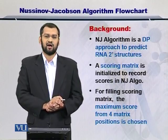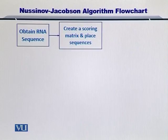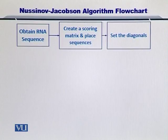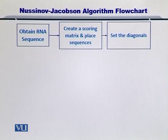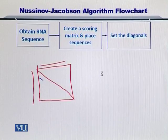So let's take a look at how this algorithm works. First, you have to obtain the RNA sequence that you will be predicting the secondary structure for. Once you have the sequence, you create a scoring matrix, which will be empty initially, and then you place the RNA sequence on top as well as on the left side of the matrix. Next, you set the diagonal of the matrix to be 0, as well as the lower diagonal.